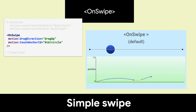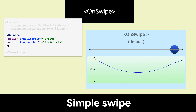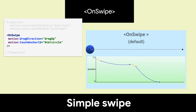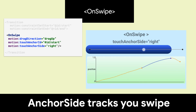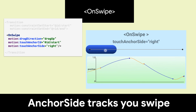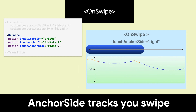In this series of examples, we are moving the circular view and graphing the position over time, red for touched and blue for not. Notice the motion tracks the motion of the anchor side. In this case, the left side is stationary.